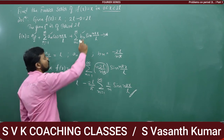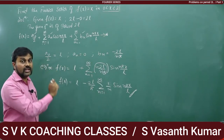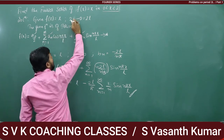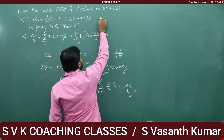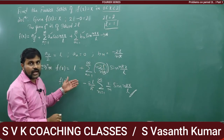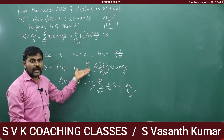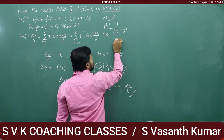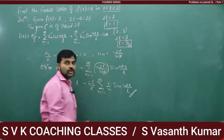As mentioned, instead of 0 to 2L there is a chance of asking 0 to 2. Then 2L = 2 gives L = 1; substitute L = 1 in the general solution. Likewise, if asked for 0 to 3, then 2L = 3 gives L = 3/2. Wherever L appears, substitute L = 3/2. It is very simple.